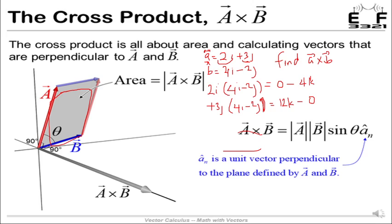Adding the non-zero terms together: −4k + 12k = 8k. Therefore A × B = 8k. This means that when you multiply the two vectors you get a vector only in the k (vertical) component, because the i and j components resolve into k. This vector 8k is perpendicular to both A and B.